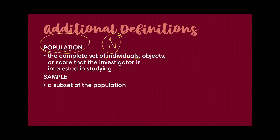Population doesn't always have to be people — we have different units of analysis. For instance, if you're looking at data like GDP or population density, you're not looking at individuals. Your population could be countries: Philippines, Malaysia, United States, United Kingdom, Ukraine, etc. The total number of countries you have is your population. We'll talk more about the different units of analysis later.